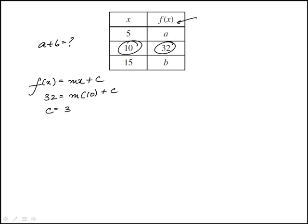c is 32 minus 10m, so I can replace that. Now we have our function in terms of just one unknown.